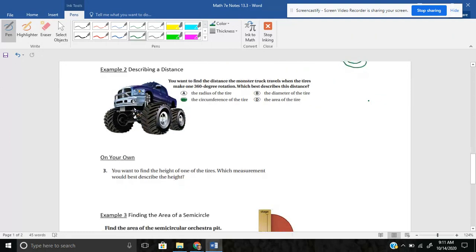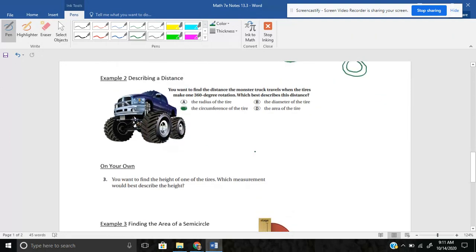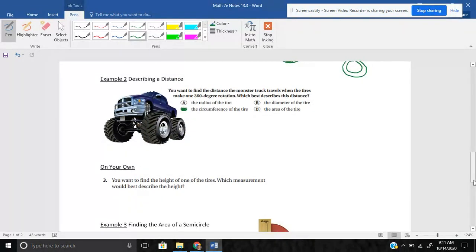Go ahead, pause for the third on your own. Kind of similar to that. It says you want to find the height of one of the tires. Which measurement would best describe the height? So if I were trying to find the height of this tire, I'd say it's the distance from here to here, from one side to the other. And that would definitely be the diameter would best describe the height of the tire.